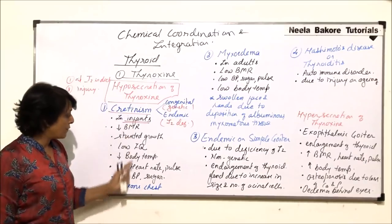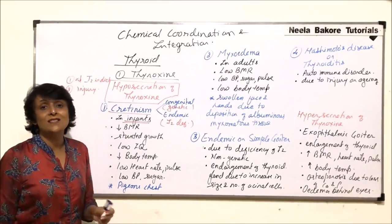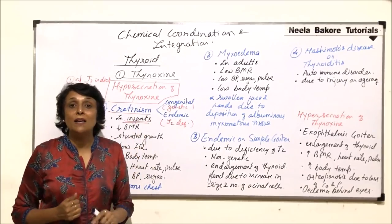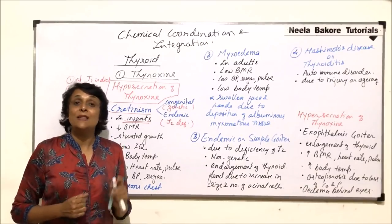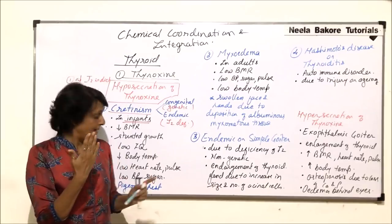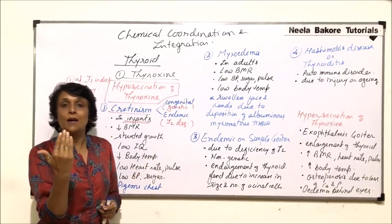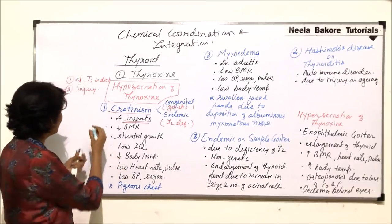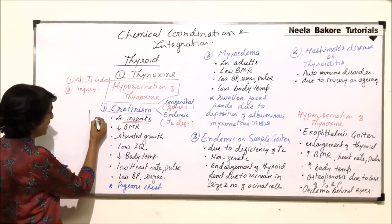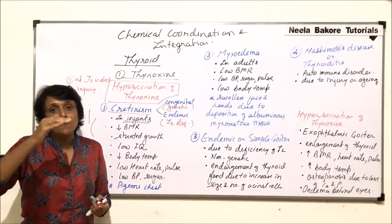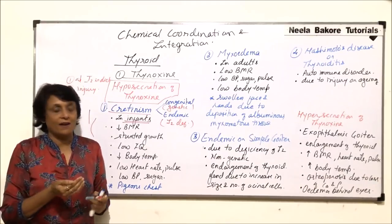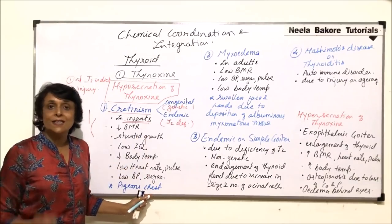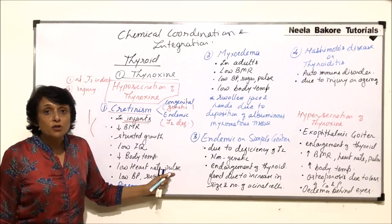The characteristic feature apart from all these things is known as pigeon's chest. Because of this, there is a bulging — because of less thyroxine, there is bulging of the sternum, that is the breast bone. The breast bone is a flat bone on the ventral side; because of this hyposecretion, it becomes scooped and bulges anteriorly, appearing as if there is a pigeon's chest. All these things can straight away be related to the functions of thyroxine.